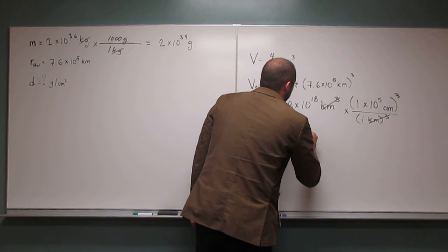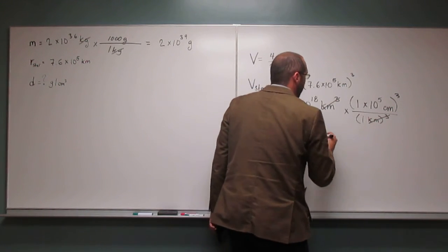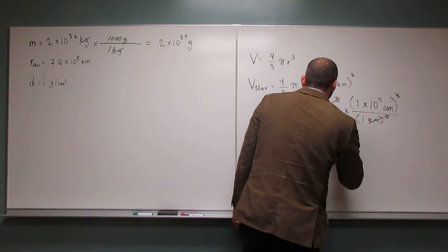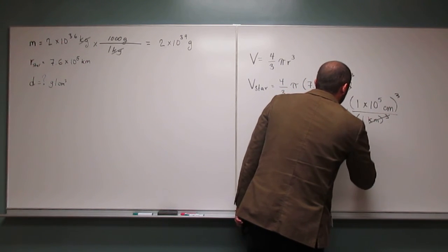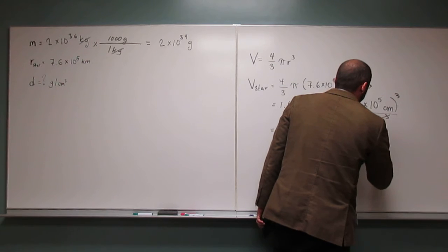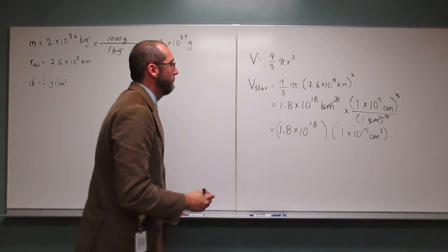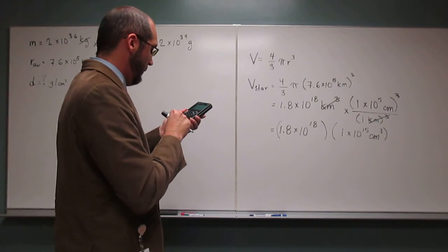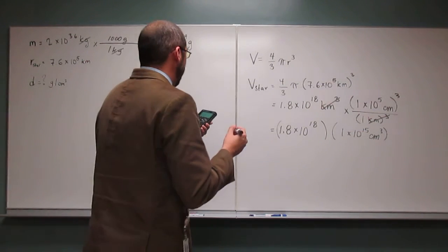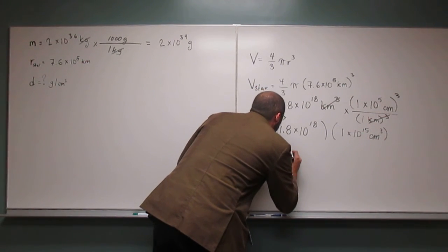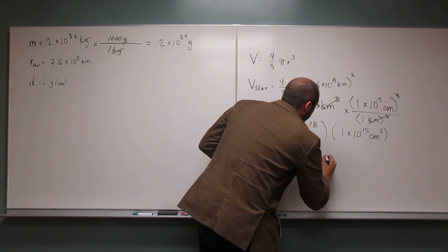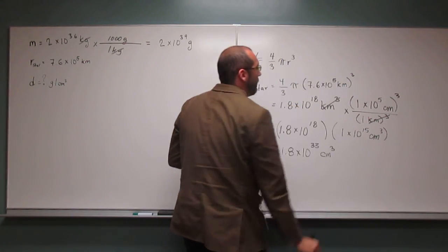So it's 1.8 times 10 to the 18th times 1 times 10 to the 15th centimeters cubed. So now let's multiply those two numbers together, so times 1, E, 15, and we get 1.8 times 10 to the 33rd centimeters cubed, because that's all the units we've got left.